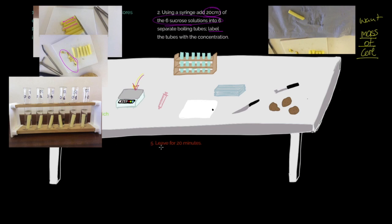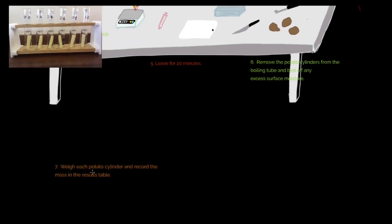And let's keep it going. Let's look at the next. We're then going to leave this for 20 minutes so we know which core's in which solution and which concentration. We're going to leave it for 20 minutes. Make sure you time that. And then we're going to remove the potato cylinders from the boiling tube. We're going to blot off any excess surface moisture again, so following that same process. And, of course, at that point, what we're going to do is we're going to start thinking about weighing them. So let's look at process seven. So process seven, weigh each potato cylinder after it's been in the solution for 20 minutes and record the mass in the results table.